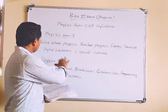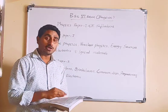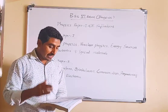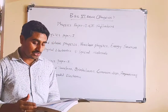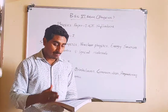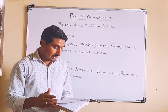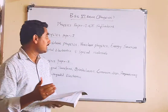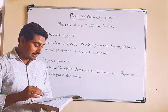In solid state physics (Unit 1), we are going to discuss crystal structure, lattice translation vectors, basis of crystal structure, types of unit cells, coordination number, Bravais lattice, seven crystal systems, Miller indices, crystal diffraction, and specific heat of solids.